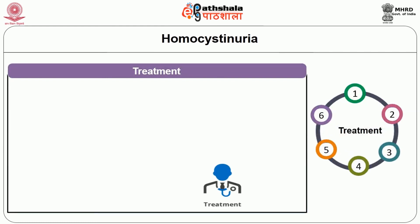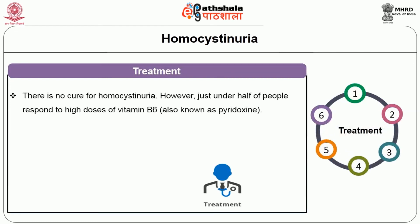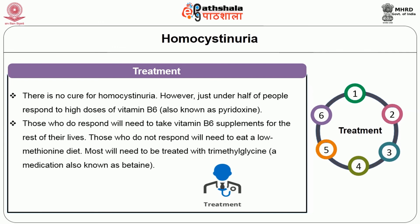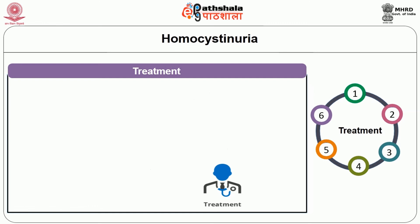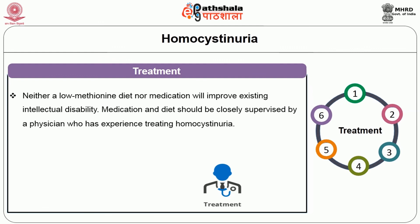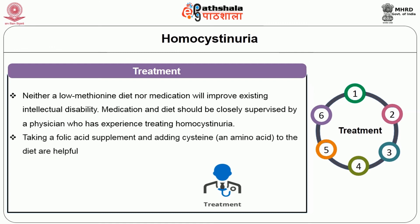There is no cure for homocystinuria. However, about half of people respond to high doses of vitamin B6 and will need to take B6 supplements for the rest of their lives. Those who do not respond will need to eat a low methionine diet and will likely need to be treated with trimethylglycine. Neither a low methionine diet nor medication will improve existing intellectual disability. Taking a folic acid supplement and adding cysteine to the diet are also helpful.